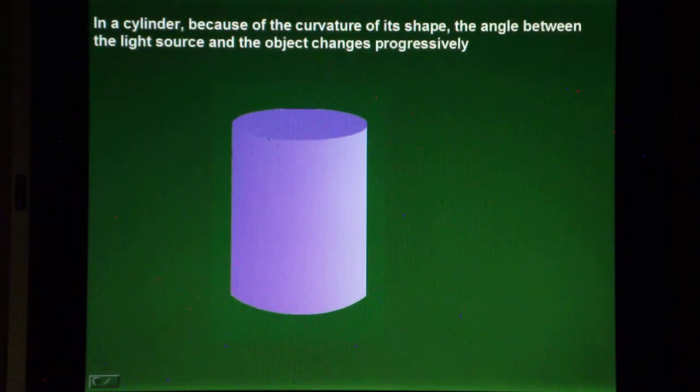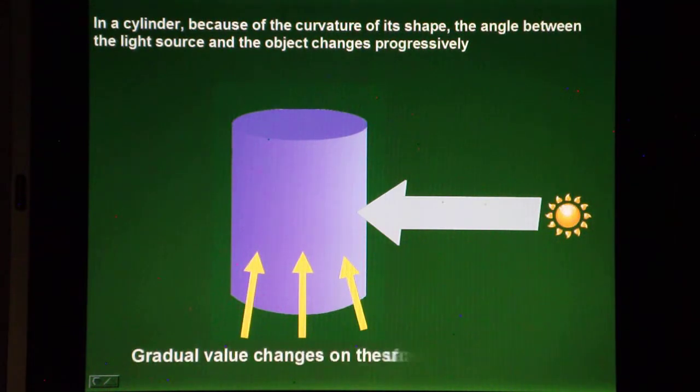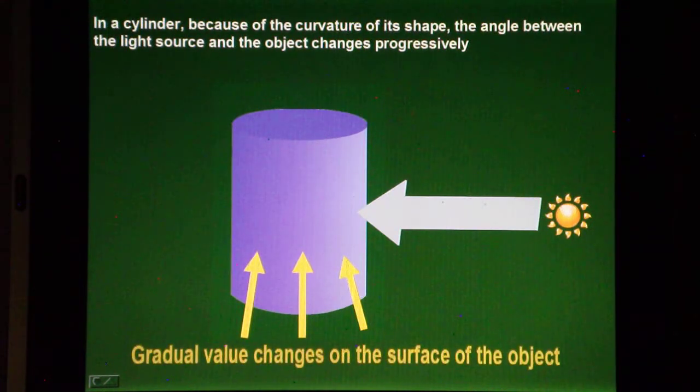While in a three-dimensional object, like a cylinder, because of the curvature of its shape, the light hits at a different angle, and as the angle between the light source and the portion of the object changes progressively, it creates a more gradual change in value on the surface of the object.